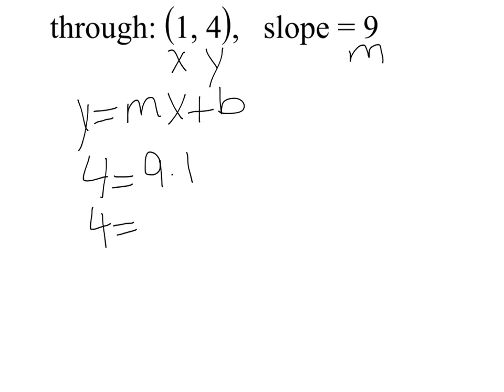You're going to subtract it from both sides because the nine is positive, and you're going to end up with negative five. That will be your b, so your slope intercept form equation for these points will be...